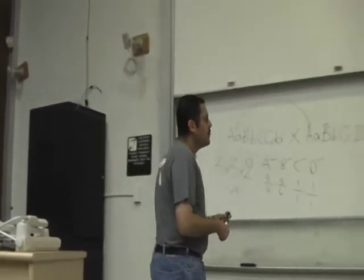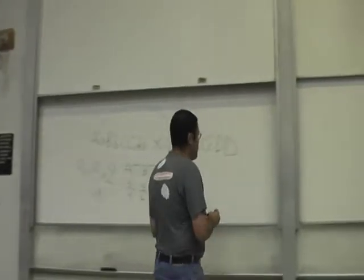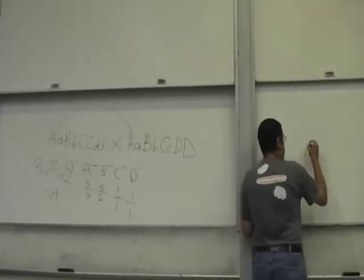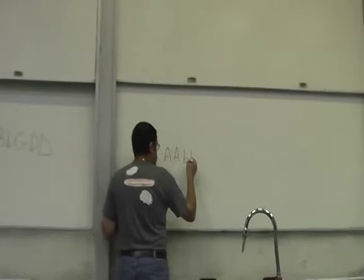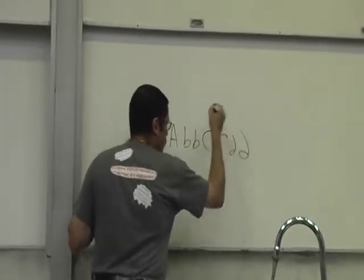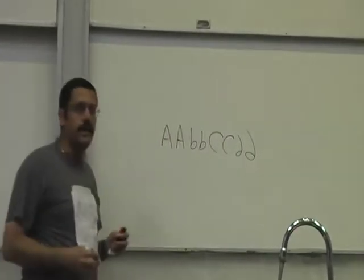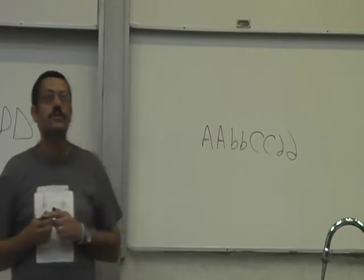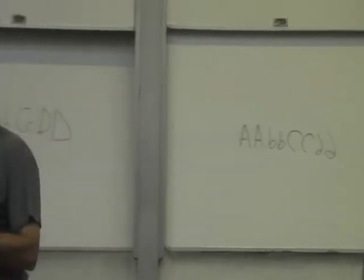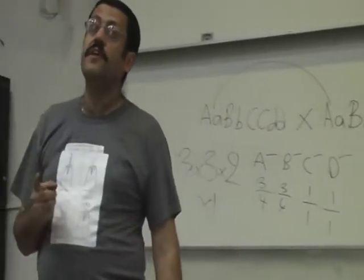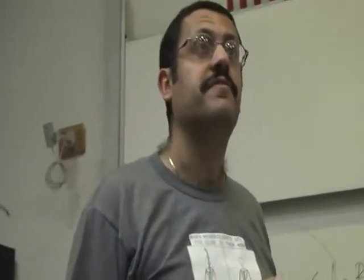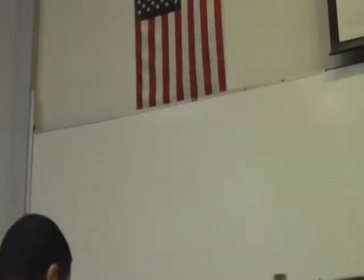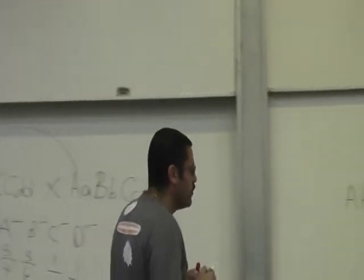It's not really true or false — remember, you will have some true and false. This is a true breeder. This is true. By definition, a true breeder has to produce how many different types of gametes? One. This one is absolutely one.